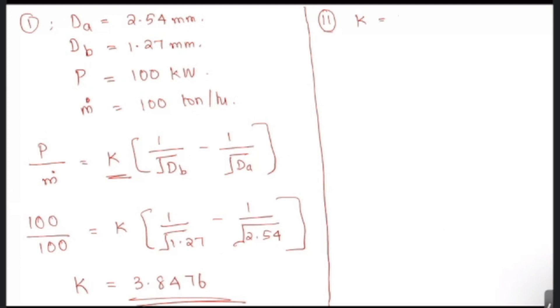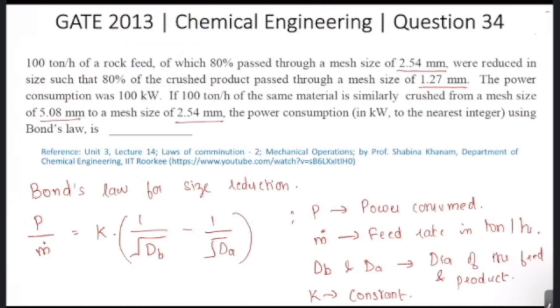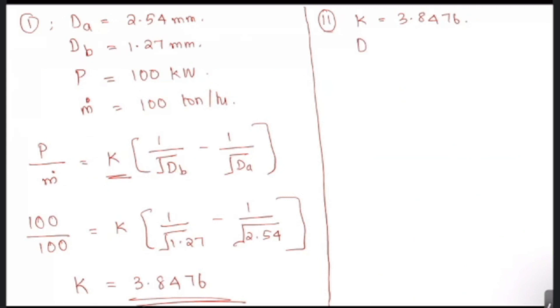So now we have the value for K, which is 3.8476. And in the second case, Da is 2.54 mm and Db is 5.08 mm, and the power P is the unknown here, and the mass flow rate m dot is given as 100 ton per hour.